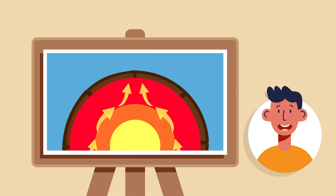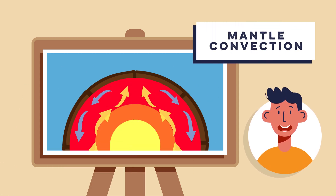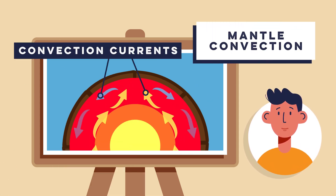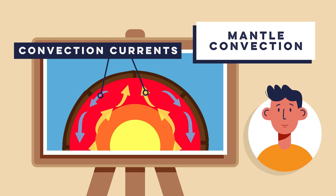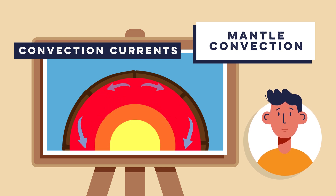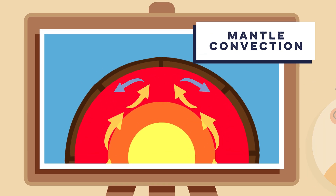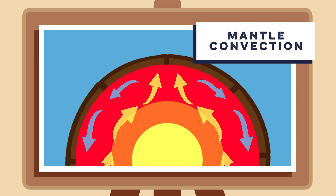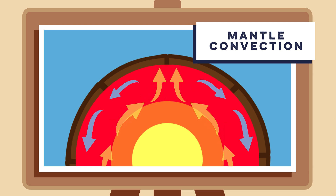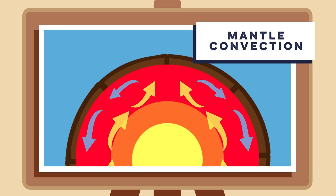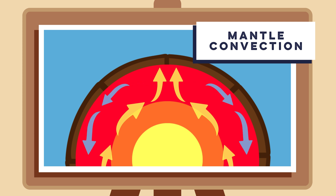Step 2 is mantle convection. As the heat rises, it creates convection currents in the semi-solid mantle. These currents are similar to the way water moves when heated in a pot. The hot mantle material rises towards the Earth's crust, while the cooler material sinks back down.